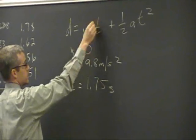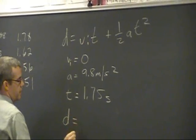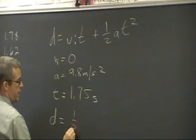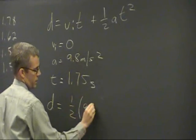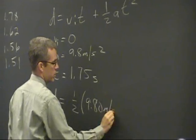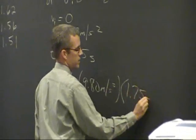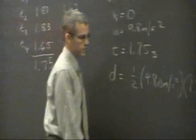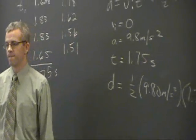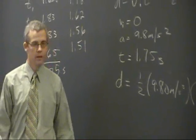This will go away because it's zero. So the distance, the height of Bead Hall, will be equal to one half times 9.80 meters per second squared times 1.75 seconds squared. Punch those in, tell me what we get.